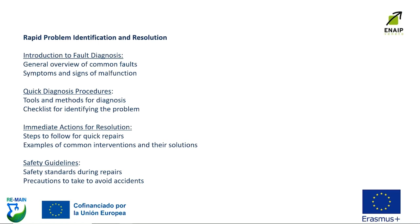As for the first learning outcome — rapid problem identification and resolution — this covers: an introduction to fault diagnosis with a general overview of common faults and symptoms and signs of malfunction; quick diagnosis procedures with tools, methods, and checklists for identifying the problem; immediate actions for a solution with steps to follow for quick repairs and examples of common interventions; and safety guidelines covering safety standards during repairs and precautions to take to avoid accidents.